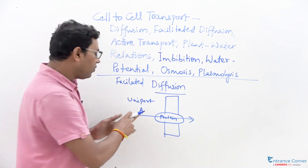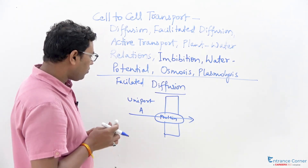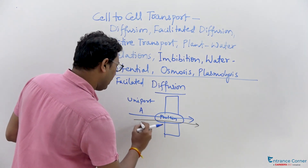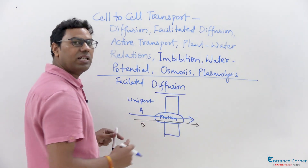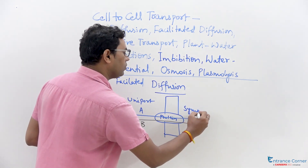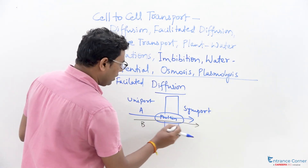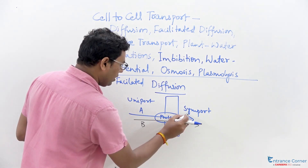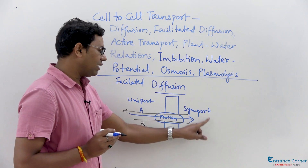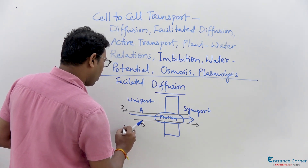If two molecules, A and B, are moving through a transmembrane protein in the same direction based upon their concentration gradient, such transport is called symport — a kind of facilitated diffusion. If molecule A is moving in one direction and molecule B is moving in the opposite direction through the membrane protein, such type of facilitated diffusion is called antiport.